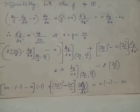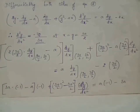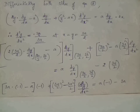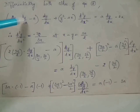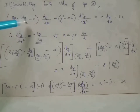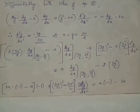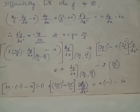To evaluate d²y/dx² at point (3a/2, 3a/2), we substitute x = 3a/2, y = 3a/2, and dy/dx = −1 into this equation. This gives 2·(3a/2)·(−1) − a multiplied by (−1), plus (3a/2)² − a·(3a/2) multiplied by d²y/dx², equals a·(−1) − 2·(3a/2).